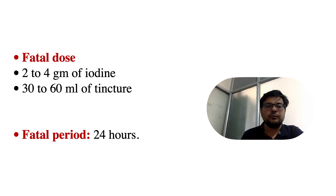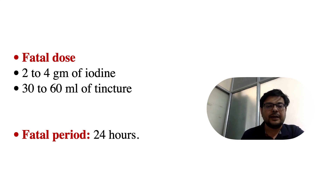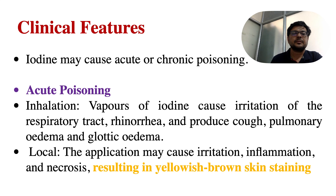The fatal dose of iodine is 2 to 4 grams of iodine and 30 to 60 ml of tincture. The fatal period is 24 hours. Now let us check out clinical features, which are very important. Iodine may cause acute or chronic poisoning.